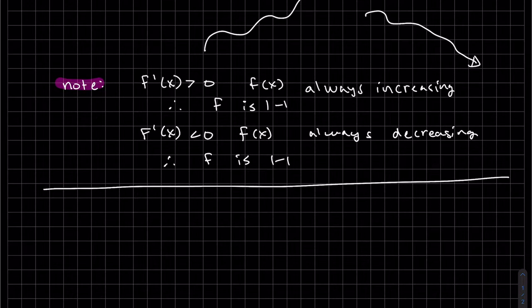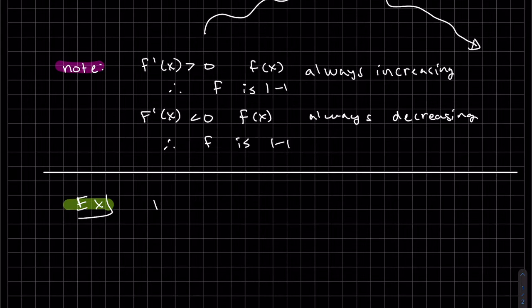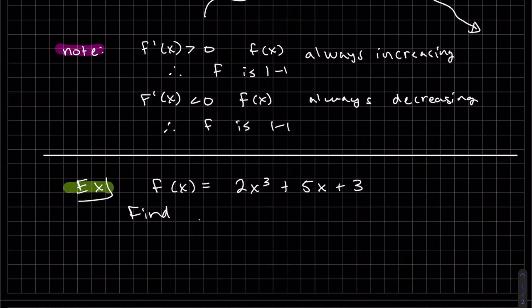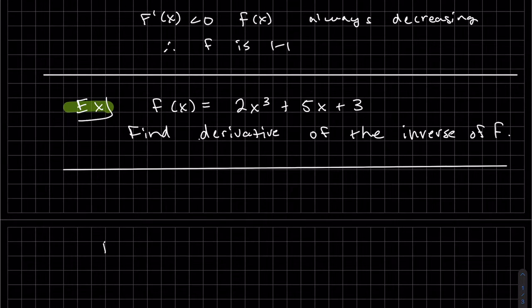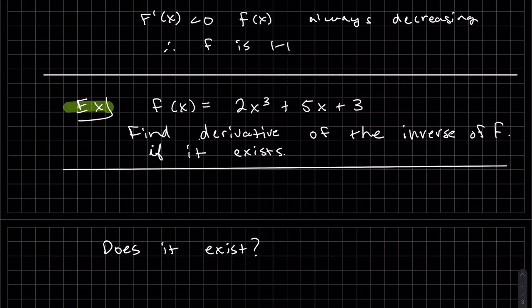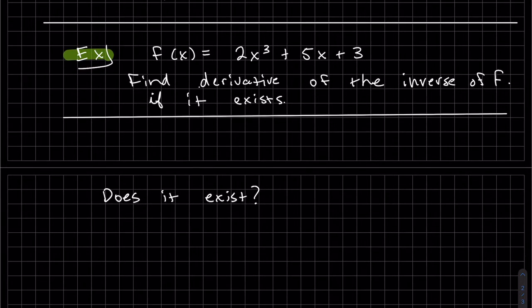So now let's do an example. Does it exist? To find out, we're going to take the derivative. Well, five's positive, x squared is positive, six is positive. We can clearly see this is strictly greater than zero.